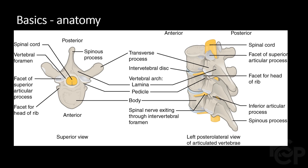Going over some basic anatomy of the vertebrae — on the left here we have a vertebra as viewed from above. We have the vertebral body in the anterior portion, and it is connected to the posterior portion via the pedicle. The posterior portion consists of the transverse process and the spinous process connected by the lamina.